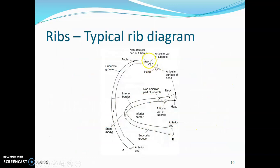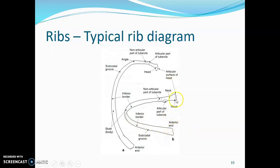The head of the rib articulates with the upper border of the corresponding vertebra and the lower border of the vertebra above. Then there is the neck, and from the neck there is an articular part of the tubercle that articulates with the facet on the transverse processes of the vertebra. From the angle, the shaft slopes downwards and forwards, and on the inferior portion of the shaft there is a subcostal groove near the inferior border. The anterior end of the rib inserts onto a costal cartilage and onto the sternum, while the posterior end has the head that articulates with the vertebra.